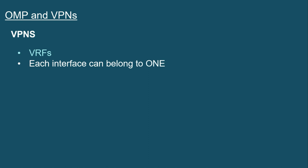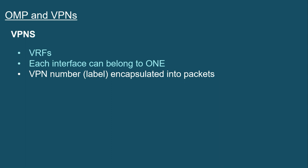Something else to realize is that on your vEdge devices, each interface is going to belong to one single VPN — we can't take an interface and attach it to multiple SD-WAN VPNs. There is going to be a VPN number, often referred to as the label, and it's encapsulated into the packets. This number is from 0 to 65535, but be careful — two of these are well-known and reserved. There's VPN 0, which is the transport VPN. This is going to be the interfaces of the WAN infrastructure, and the transport VPN is key so that we can have those DTLS protections on the traffic.